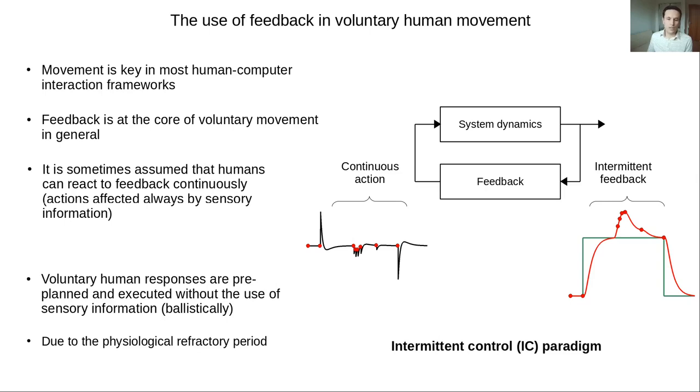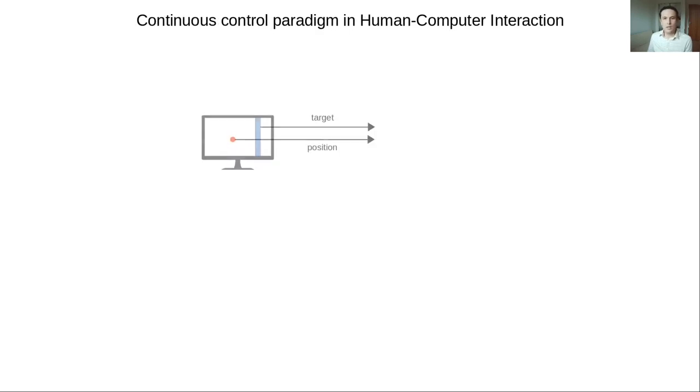Now let's have a look at the continuous control model in the context of pointing with a little bit more detail. Let's start with a general pointing task, where there is a target on a screen and the goal is to bring the pointer to the target as fast as possible using a computer mouse.